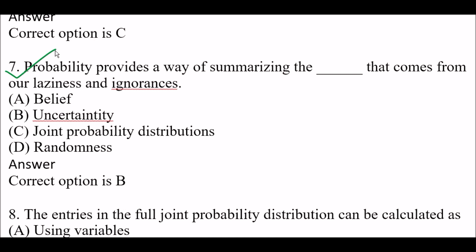Next question: Probability provides a way of summarizing the blank space that comes from our laziness and ignorance. Option A: Belief, Option B: Uncertainty, Option C: Joint probability distribution, Option D: Randomness. Right answer is Option B — probability provides a way of summarizing the uncertainty that comes from our laziness and ignorance.